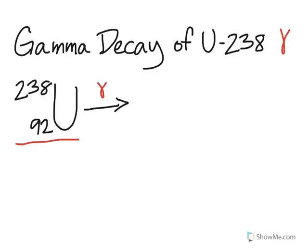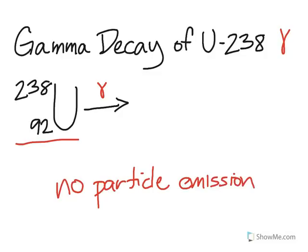Now gamma decay actually doesn't produce any particles, so this is a no particle emission. It's just energy.